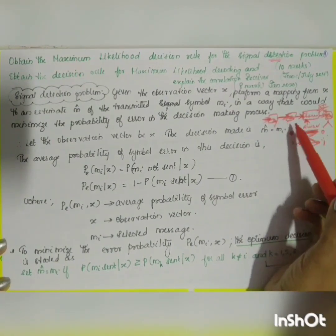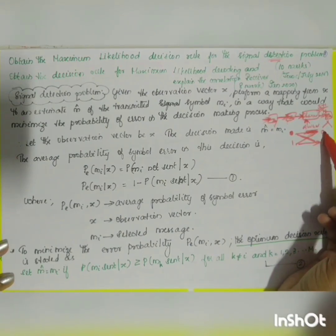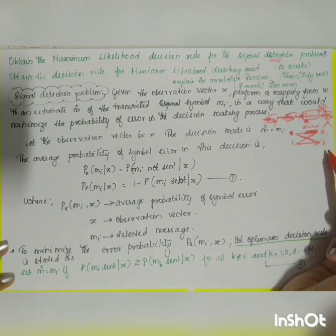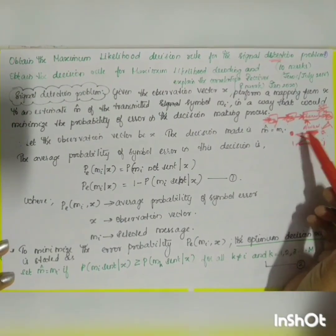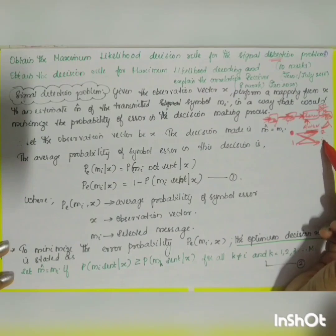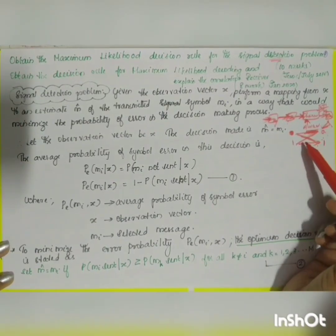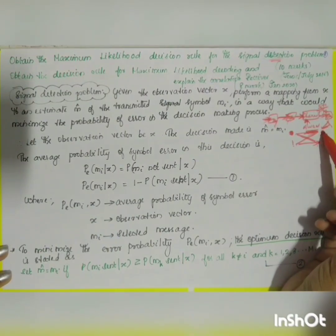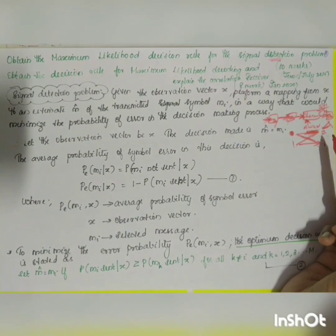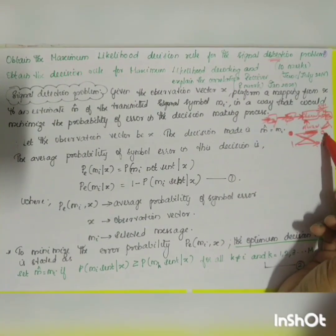Suppose we are sending digital data zero — there is a probability that you can receive zero or sometimes one. Receiving zero when zero is transmitted is correct; receiving one when zero is transmitted is an error. Similarly, when one is transmitted, there is a probability of receiving one or zero. If one is transmitted and zero is received, that is also an error.